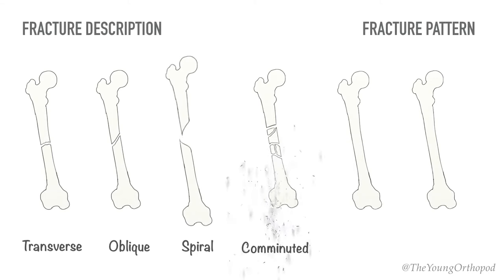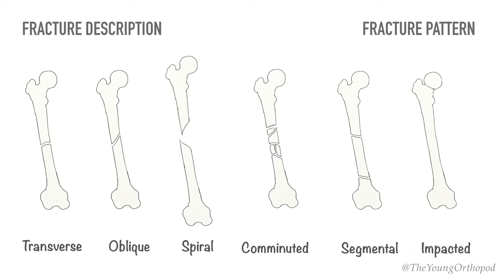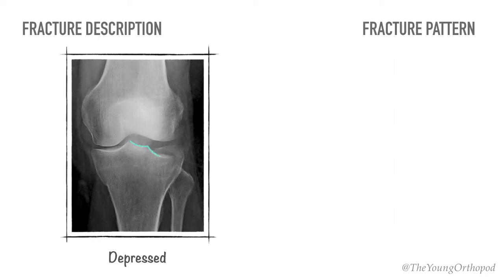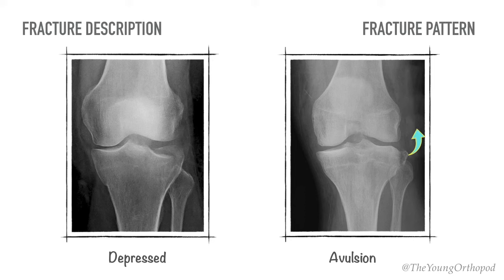A comminuted fracture is a fracture with multiple fragments. In a segmental fracture, there are two fractures in one bone but at different levels. An impacted fracture is one in which the end of the bone is driven into the contiguous metaphyseal region without displacement. A depressed fracture is a form of impacted fracture that involves the articular surface and results in joint incongruity. An avulsion fracture is one in which a tendon or ligament is pulled away from the bone, carrying a bone fragment with it.